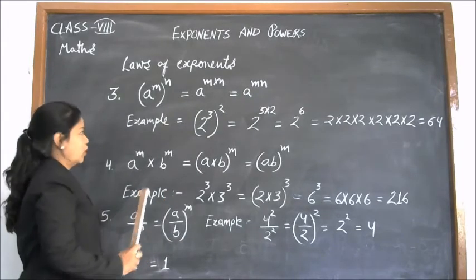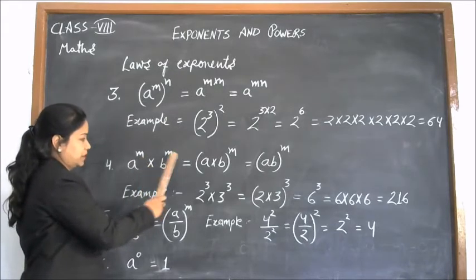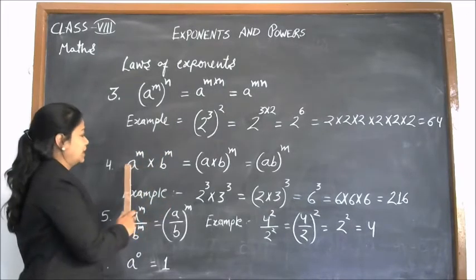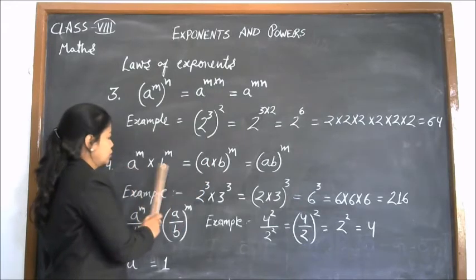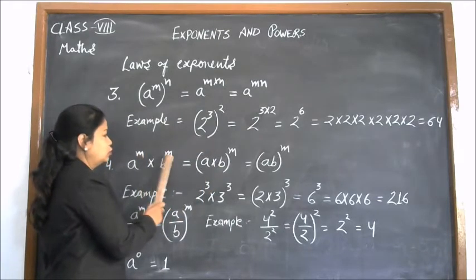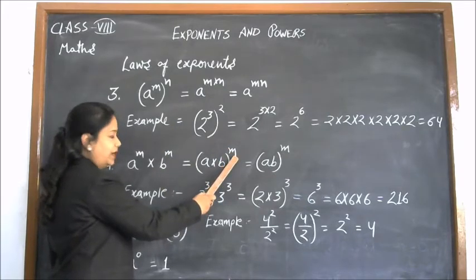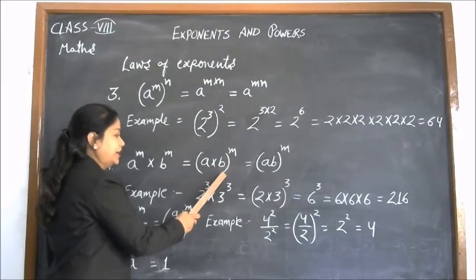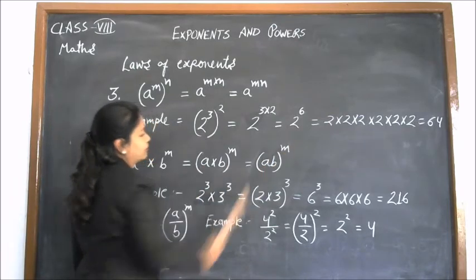Our fourth law of exponents is: a to the power m into b to the power m. Now we have different bases but the same power, and we have to multiply these two numbers. In this situation, we can write the product of a and b and write only one power. We can write this as a into b, whole to the power m.